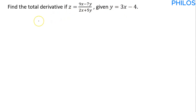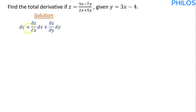To solve that, this is the formula we are going to use. The total derivative formula states: dz is equal to partial z partial x times dx, plus partial z partial y times dy. If there were 3 variables like x, y, and q, it would continue with plus partial z partial q times dq.